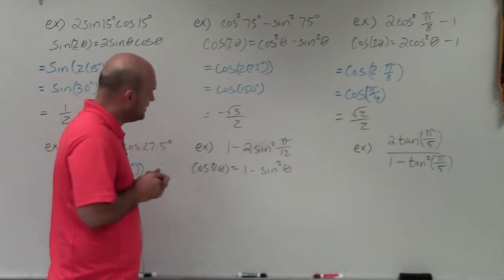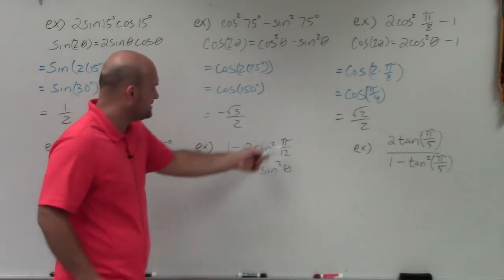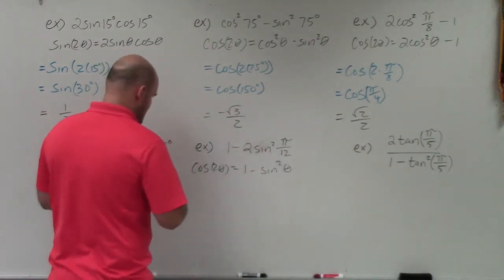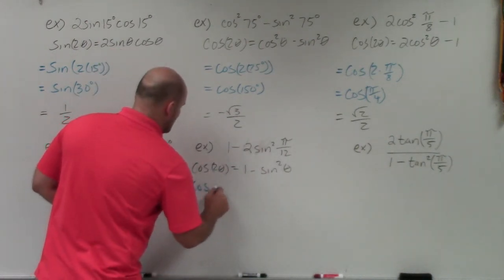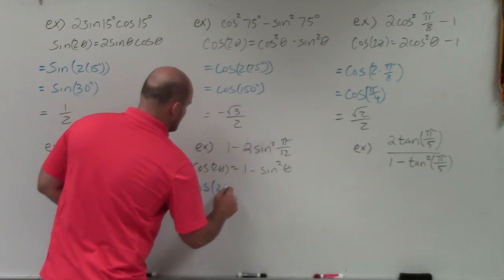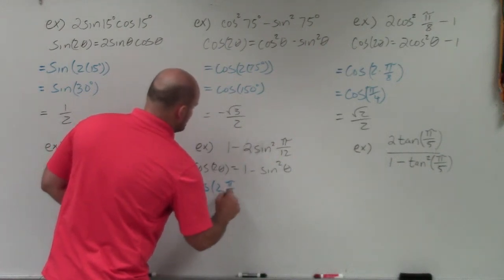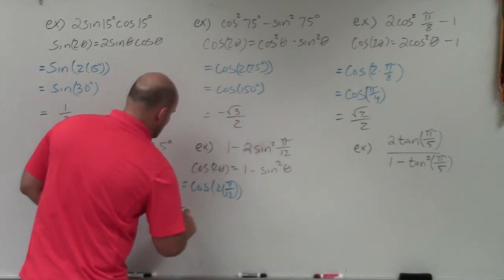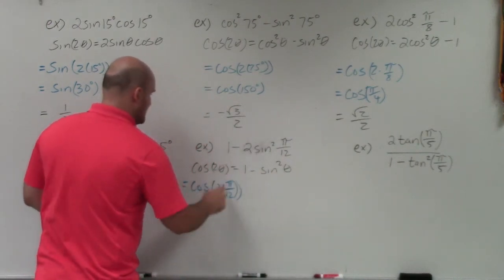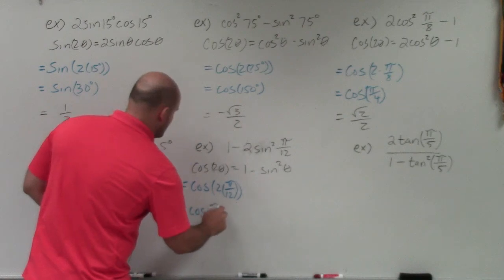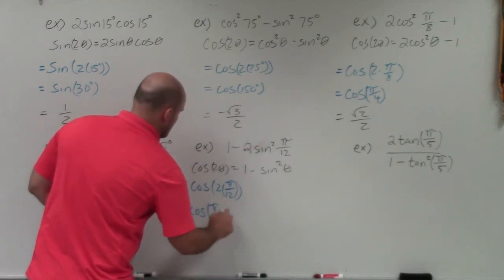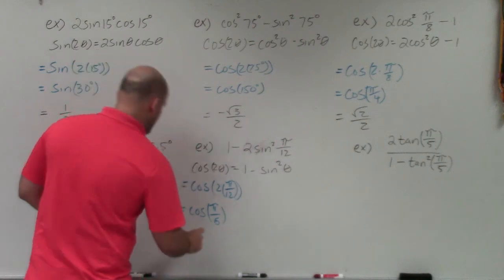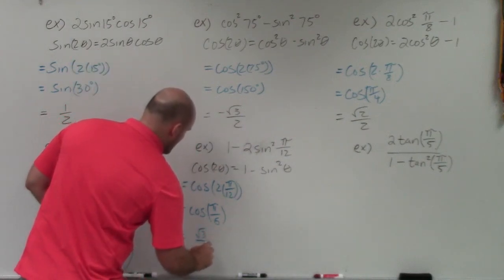We can see that theta has been replaced with π/12. Plugging π/12 in for theta gives cosine of 2 times π/12, which equals cosine of 2π/12. That reduces to cosine of π/6, and the cosine of π/6 equals square root of 3 over 2.